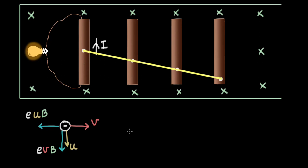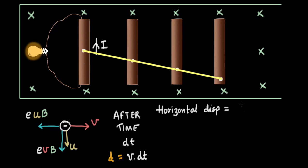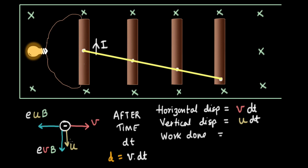To find the work, we need the displacement of this electron over a time interval dt, both horizontal and vertical. Displacement is given by velocity times time, so the horizontal displacement is V·dt and the vertical displacement is U·dt. Work done is given by the dot product of force and displacement: W = F·D·cos θ, where θ is the angle between the force and displacement vectors.